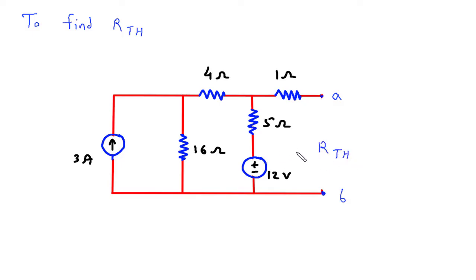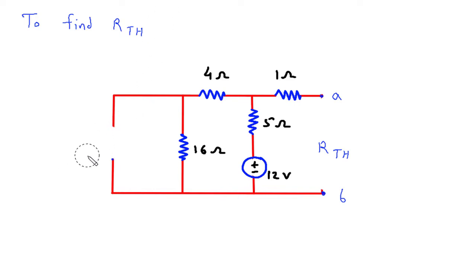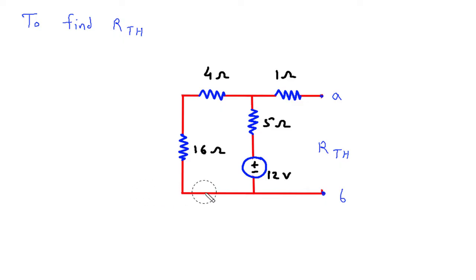Now to find RTH, we will turn off all the independent sources. This current source will be open circuited, and this voltage source will be short circuited.